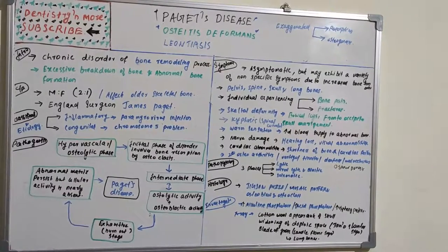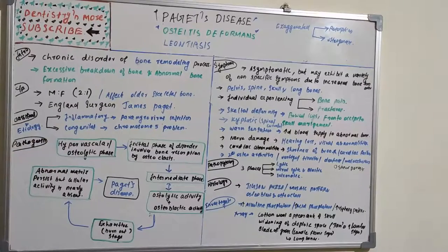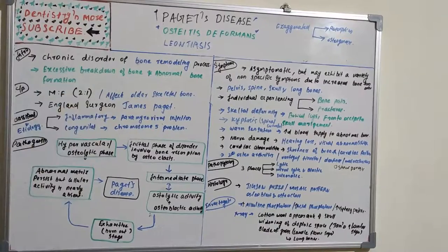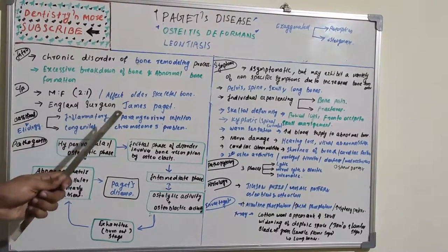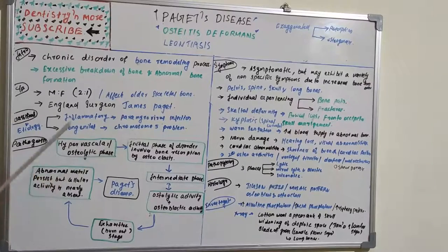Paget's disease is seen commonly among males in a 2:1 ratio compared to females, and it affects the older skeleton. It was first described by English surgeon James Paget, hence the name. It has two types: inflammatory and congenital. Etiology can be inflammatory — such as paramyxovirus infection — or genetic, involving a mutation in chromosome number five.